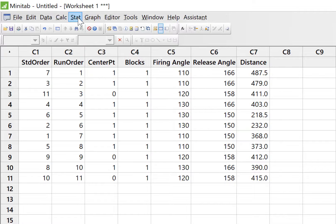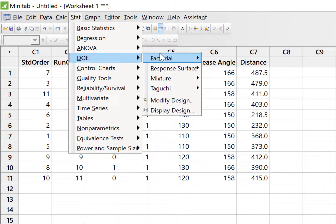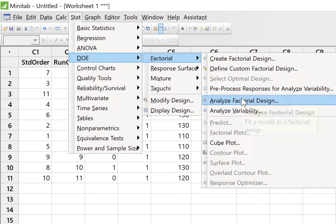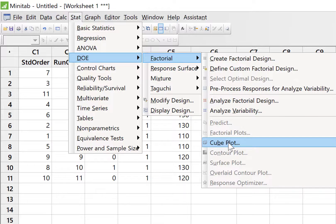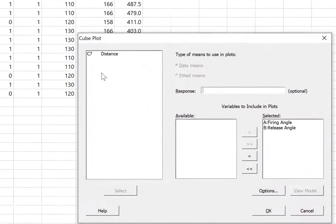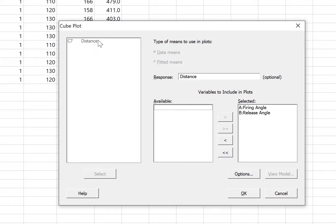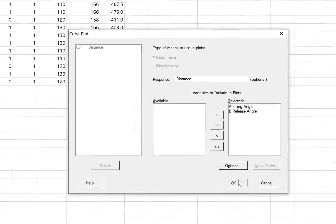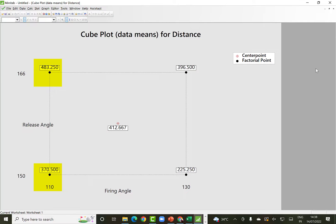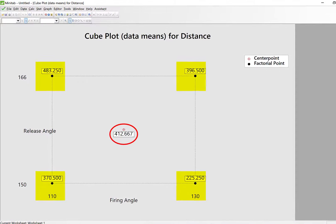We can visualize the design using a cube plot. For that stat, DOE, factorial and cube plot. And select the response distance which is the only response. And if you click OK, we will see the cube plot which shows what is the average response at the four corner points and also the center point.